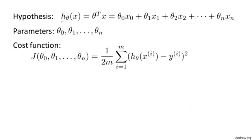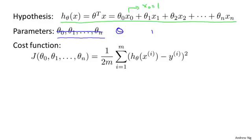To quickly summarize our notation, this is a formal hypothesis in multivariate linear regression, where we'd adopted the convention that x0 equals 1. The parameters of this model are theta 0 through theta n, but instead of thinking of this as n separate parameters, which is valid, I'm instead going to think of the parameters as theta, where theta here is an n plus 1 dimensional vector. So I'm just going to think of the parameters of this model as itself being a vector.